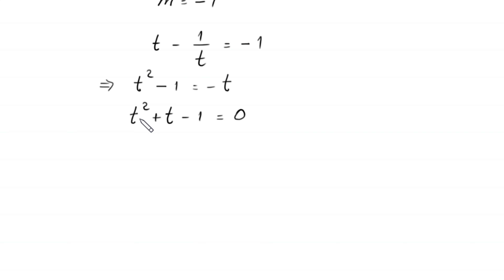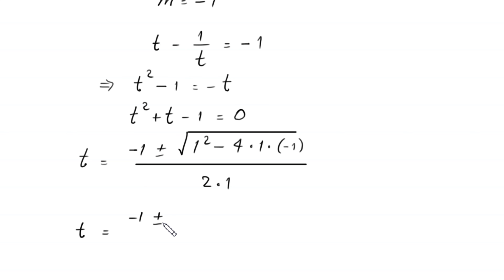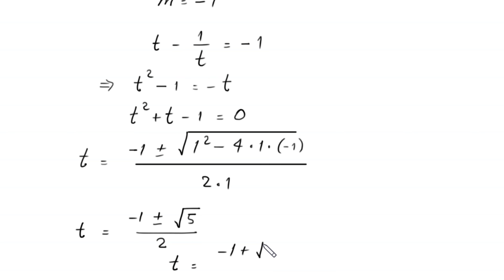This quadratic is not factorable, so we use the quadratic formula. t equals negative b, which is 1, plus or minus square root of (b² minus 4ac) equals negative 1 plus or minus square root of (1 plus 4) divided by 2, giving t equals (negative 1 plus root 5) over 2 or t equals (negative 1 minus root 5) over 2.